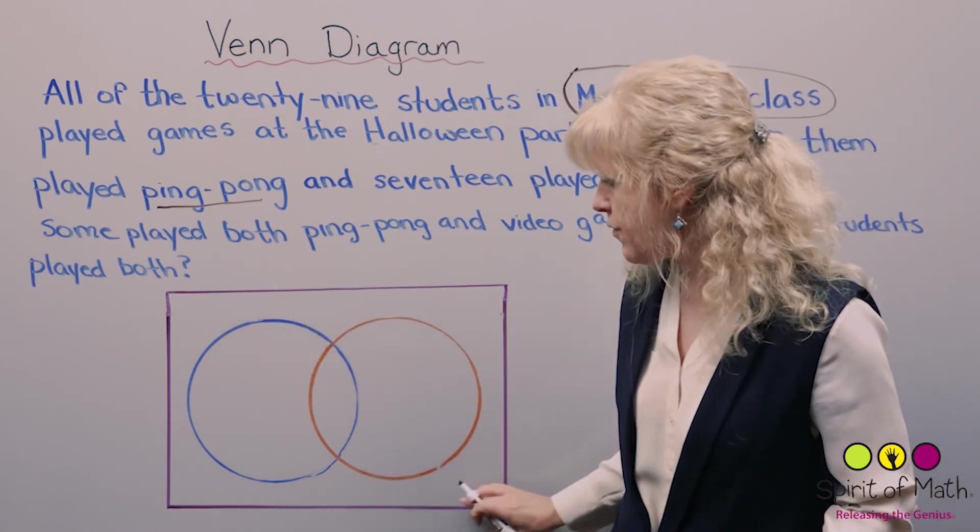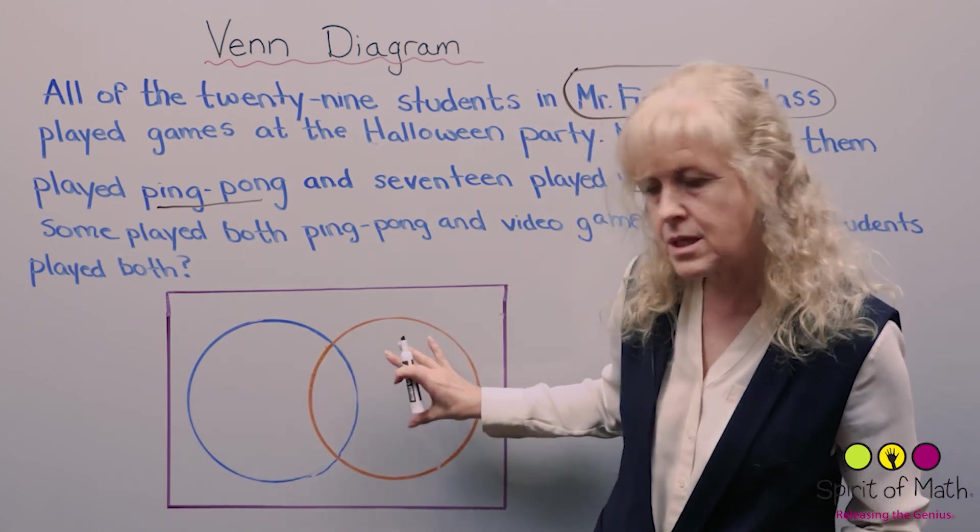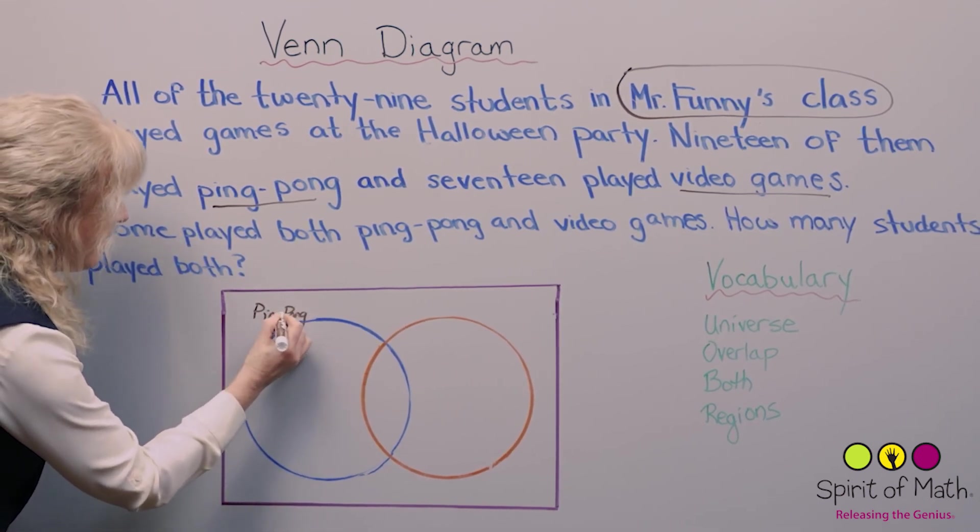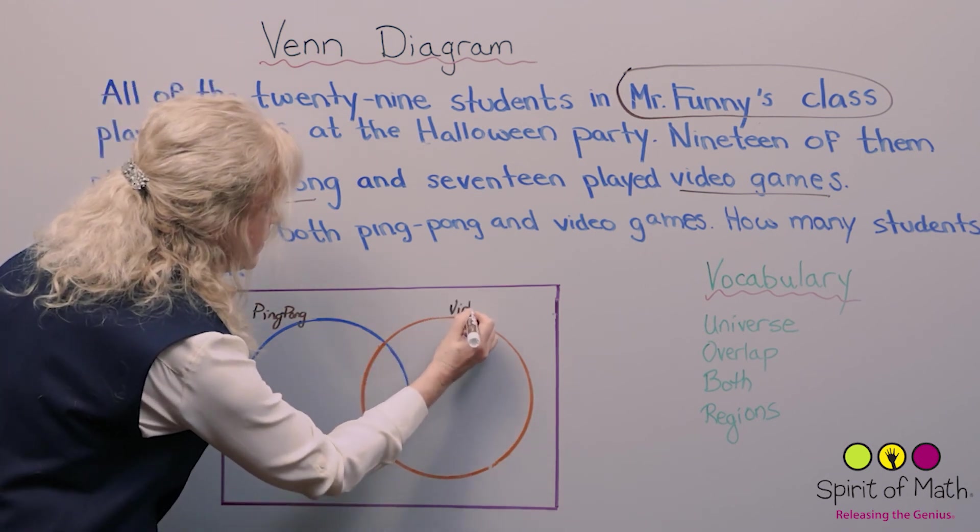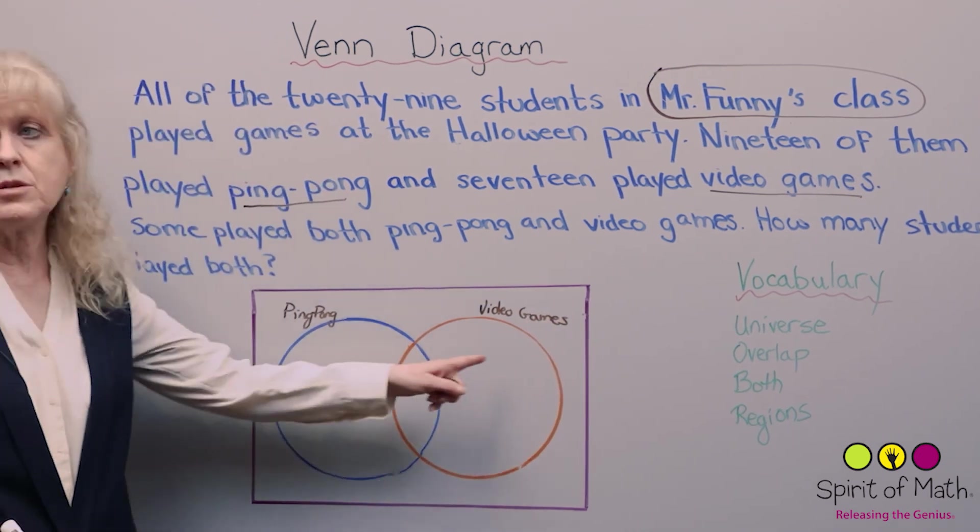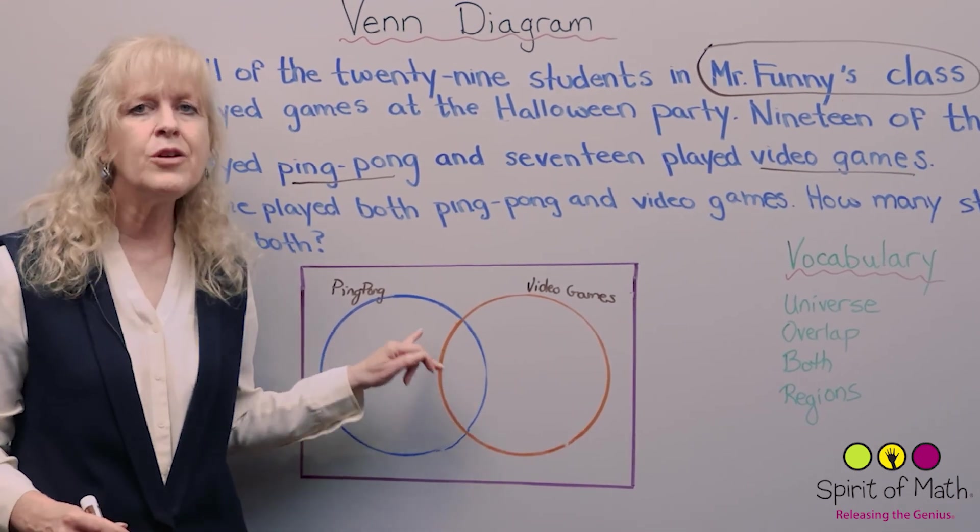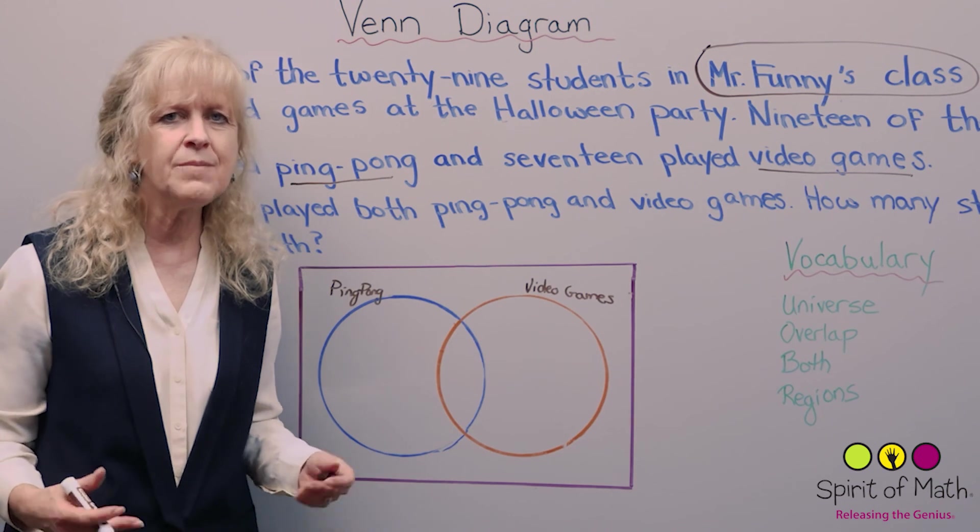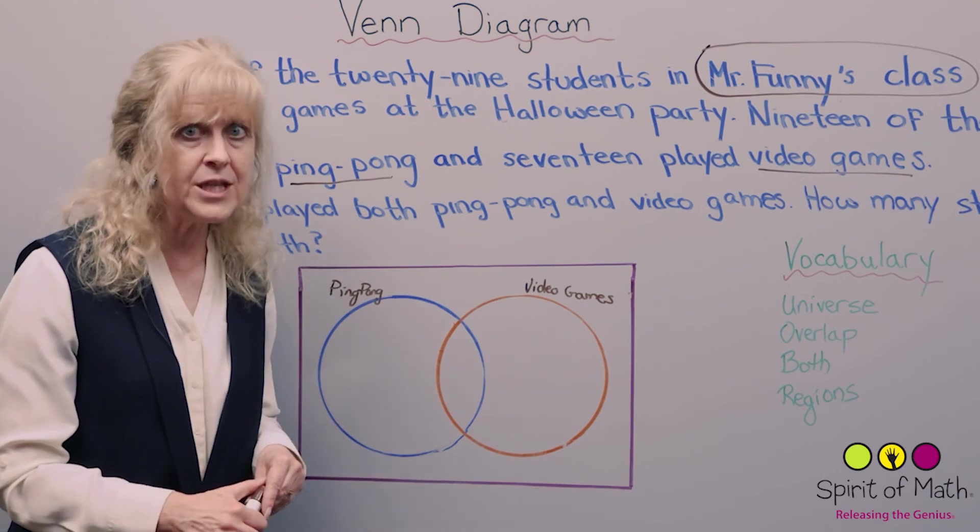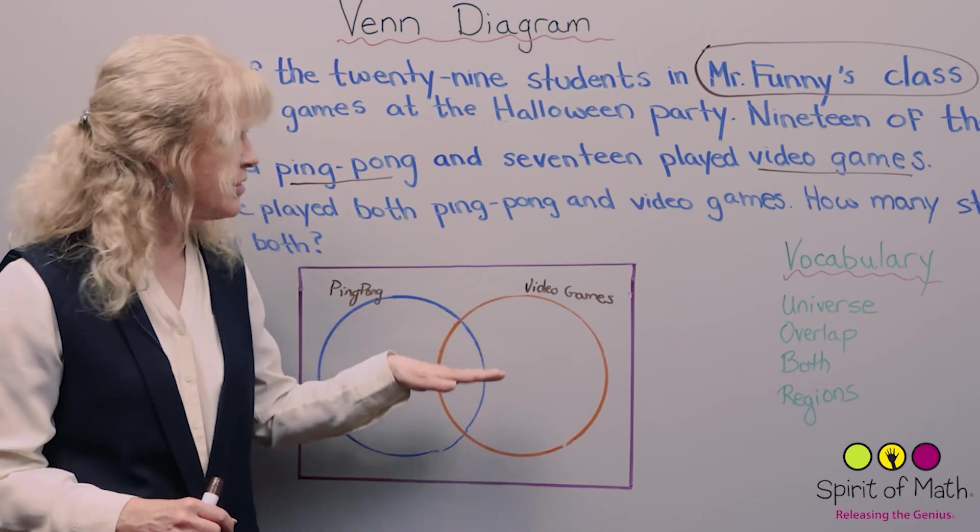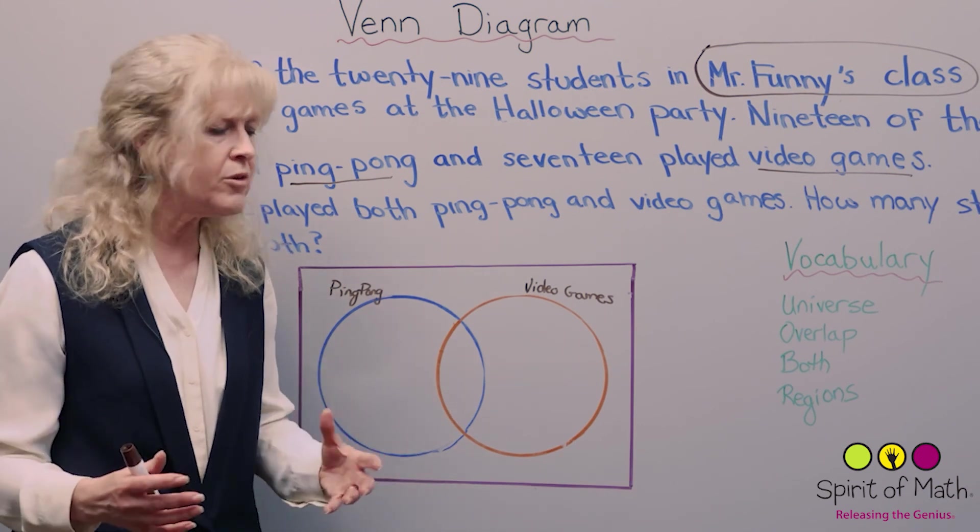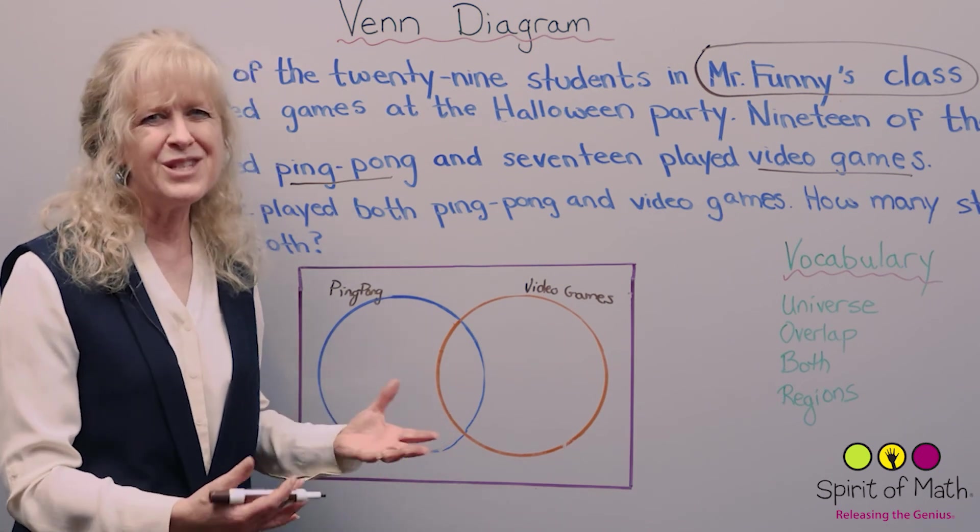You've got your universe and then you've got this group and then you've got this other set. This one we'll call ping pong and this one video games. I do ask that the students label these so that they don't get mixed up and they know very clearly what's happening. It is also part of communication skills for kids in mathematics, so that if someone else looks at what they've done, they know what they've done and they can see their thinking. This is a skill for the kids to learn, even in grade one, and they repeat it in grade two, grade three and grade four.